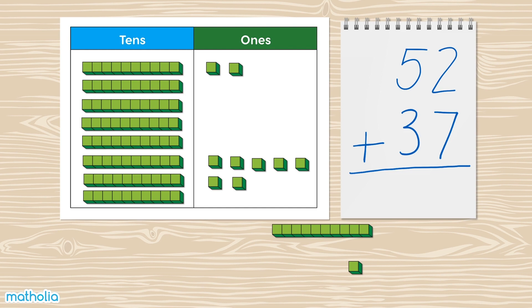First, bring the ones together and find the total. There are 9 ones in total. Write 9 in the ones column.